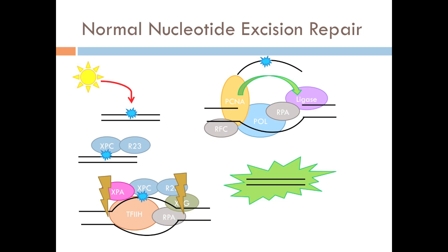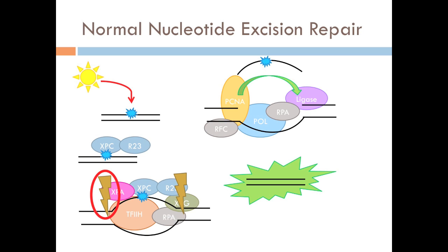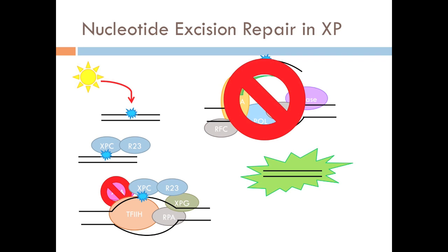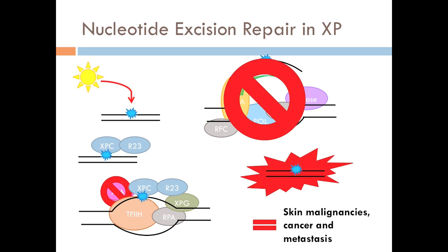The classic cause of Xeroderma Pigmentosum is a mutation in a gene known as XPA, which is shown in pink. XPA encodes a protein that is recruited by both XPC and R23, proteins that recognize the region of damaged DNA. Then XPA recruits ERCC1 and XPF to the lesion so they can excise the damaged segment. Therefore, without XPA function, we hypothesize that the damaged segment would not be excised, and damaged DNA will accumulate and lead to mutated cells.